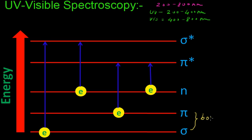These are bonding molecular orbitals and n stands for non-bonding electrons. Sigma star and pi star represent the anti-bonding molecular orbitals.